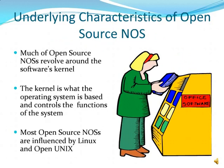Underlying characteristics of open source network operating systems. Much of open source network operating systems revolve around the software's kernel. The kernel is what the operating system is based on and controls the functions of the system. Most open source network operating systems are influenced by Linux and OpenUNIX.